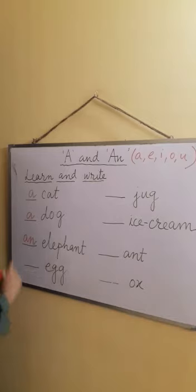Egg. E. Again this is a vowel, E, so we will write An. An egg.